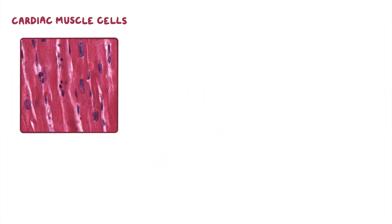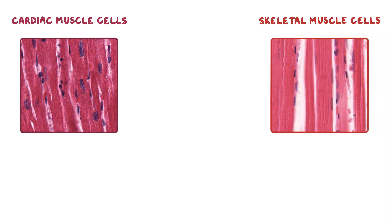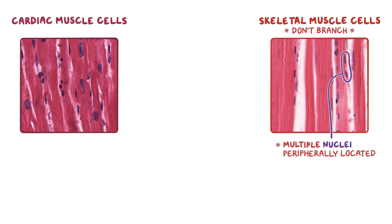Let's take a look at a longitudinal section of cardiac muscle cells stained with hematoxylin and eosin, or H and E for short. Comparing cardiac muscle cells to skeletal muscle cells, skeletal muscle cells don't branch and have multiple nuclei that are peripherally located along the cell, whereas cardiac muscle cells are branched and usually have just one, or occasionally two, centrally located nuclei.